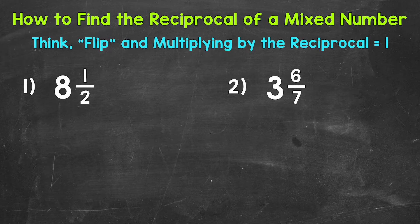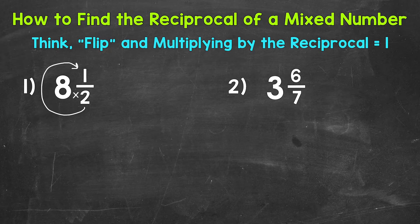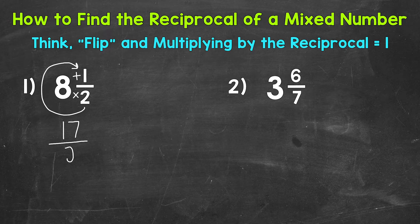Let's multiply, then add to get our improper fraction, starting at the bottom. We work our way up — we multiply, and then add. So 2 times 8 is 16, plus 1 is 17. So 17 is the numerator of our improper fraction, and we keep the denominator of 2.